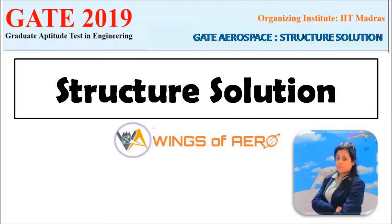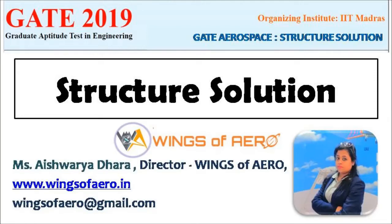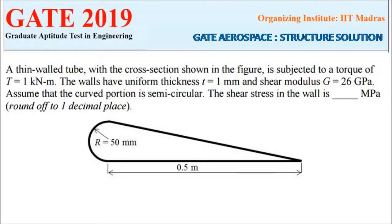Hi guys, today we will see solutions of GATE aircraft structure problems which have been asked in GATE 2019. The first question: a thin-walled tube with a cross section shown in the figure is subjected to a torque T equals 1 kilo Newton meter. The walls have uniform thickness t equals 1 mm and shear modulus G equals 26 GPa. Assume the curved portion is semicircular.